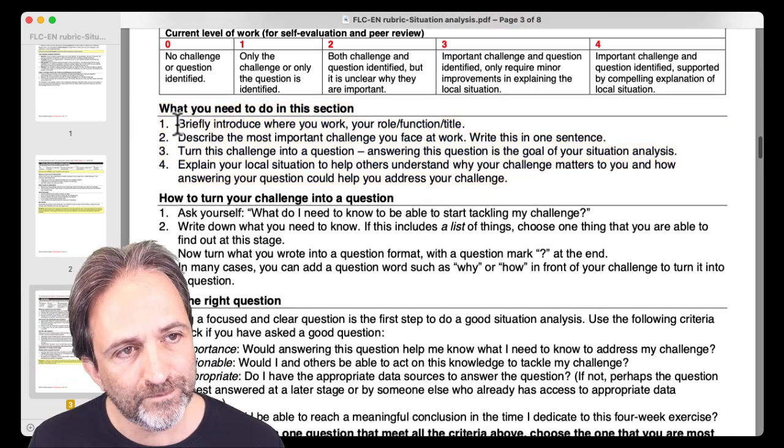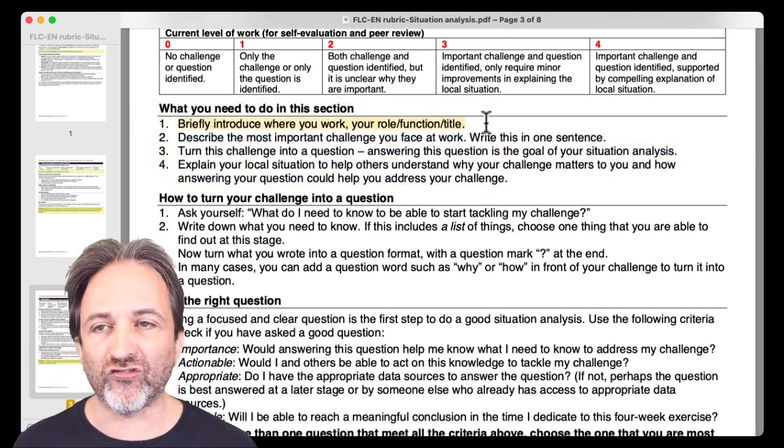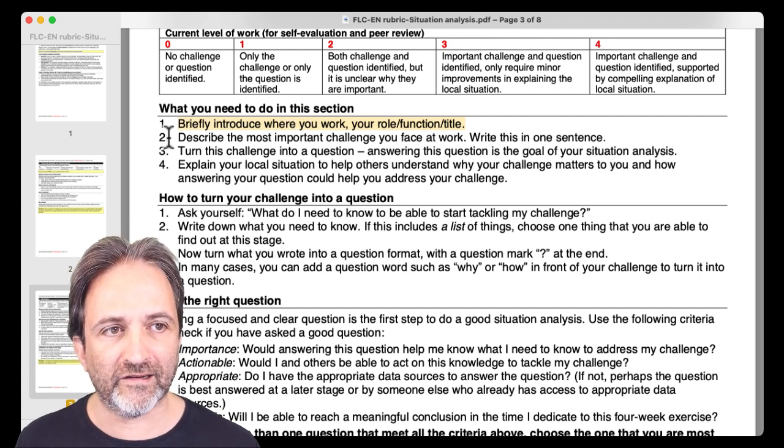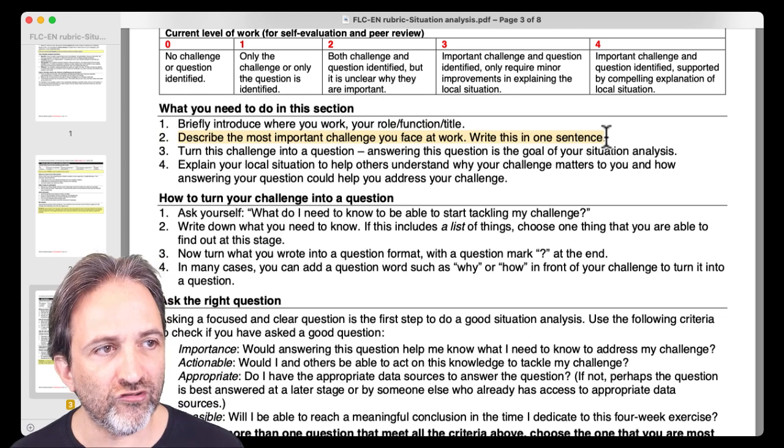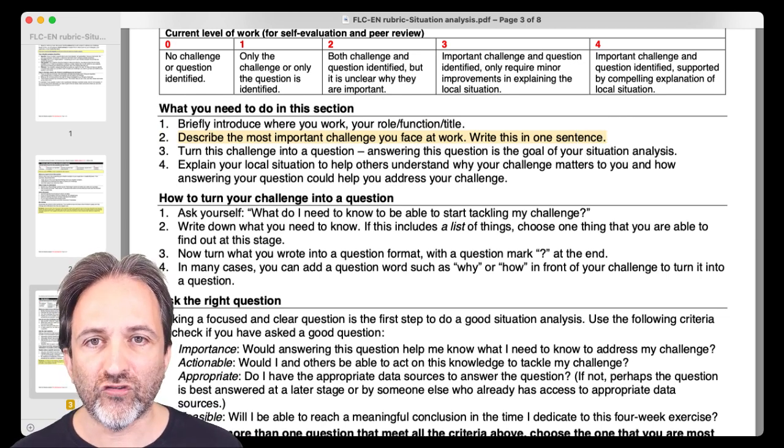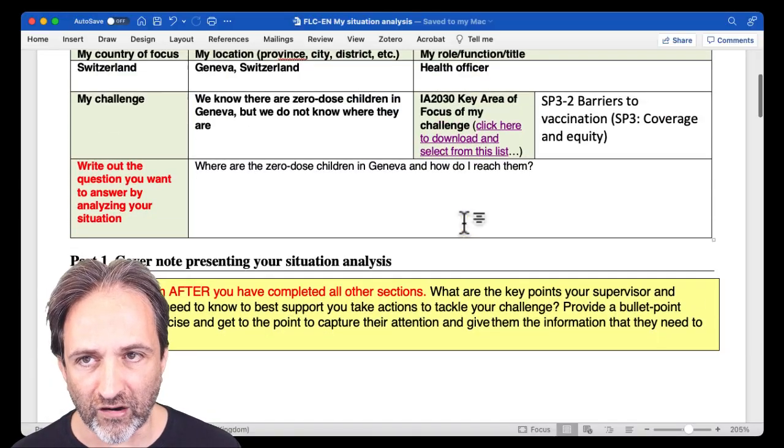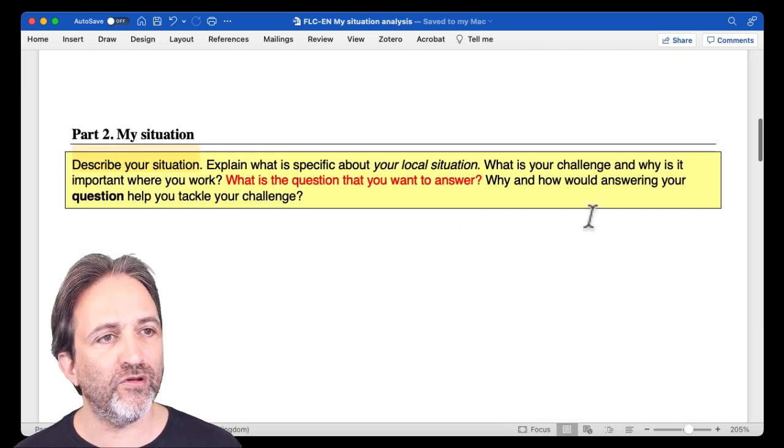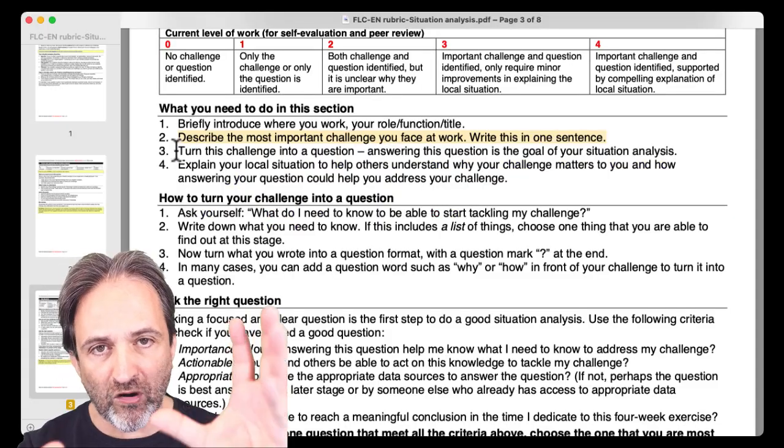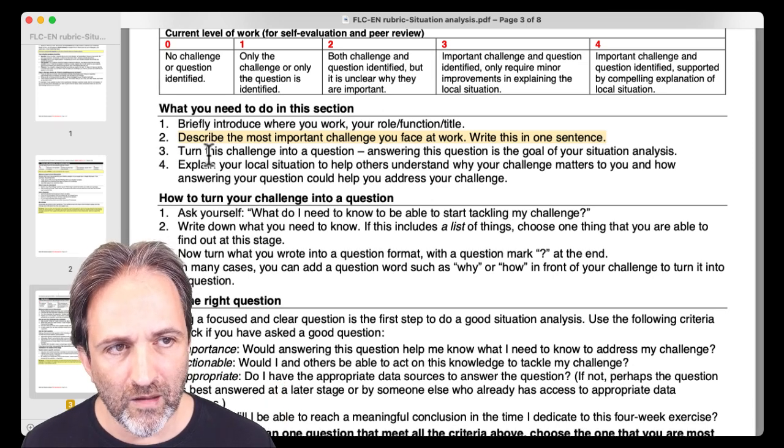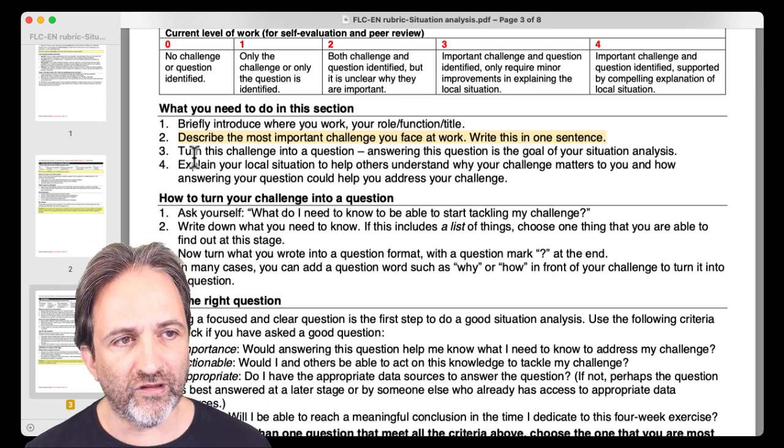This gives you sort of more detailed advice, guidance to help you think through what you put into this My Situation section. So you can see here, introduce yourself where you work, your function title. You don't need to put your name. That's recorded automatically in the system. Describe the most important challenge you face at work. So yes, you have done that in the box. But in order to build a coherent narrative, you probably want to repeat yourself there. So it's summarized in the box, so we can see it right at the top. But you need to build a good narrative.